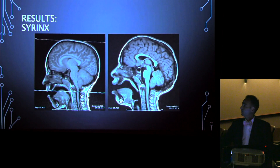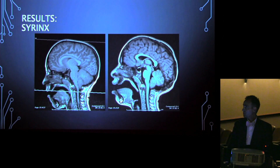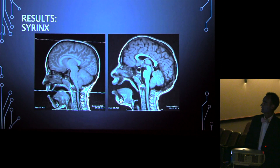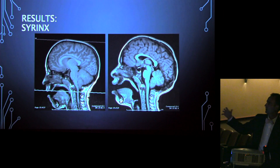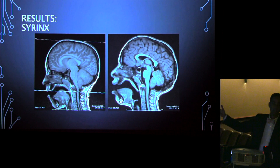Here's another example: a patient with Crouzon syndrome. On the left you can see the Chiari malformation, and in the upper cervical spine there's a syrinx developing with fluid in the spinal cord. The same operation — enlarge the back of the skull, open the foramen magnum, enlarge the posterior fossa — results in the Chiari improving and the syrinx resolving.